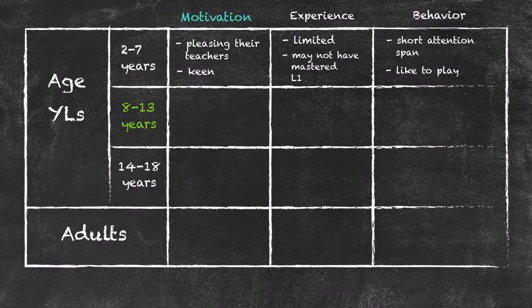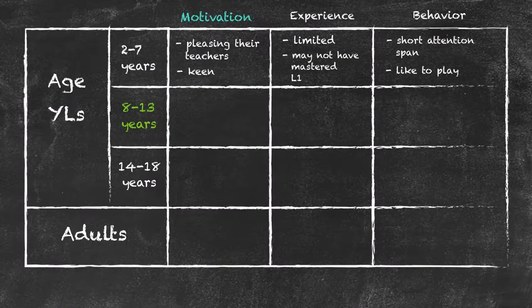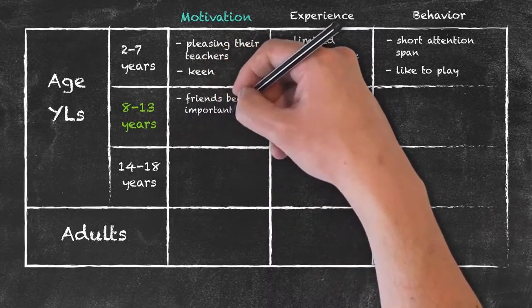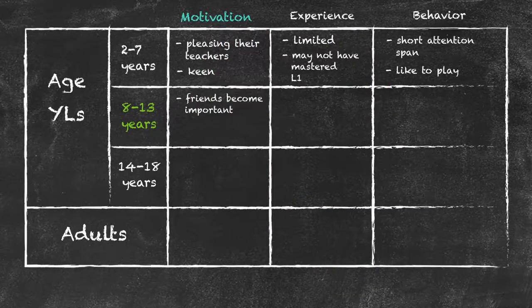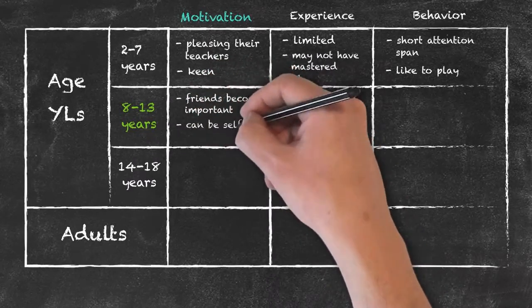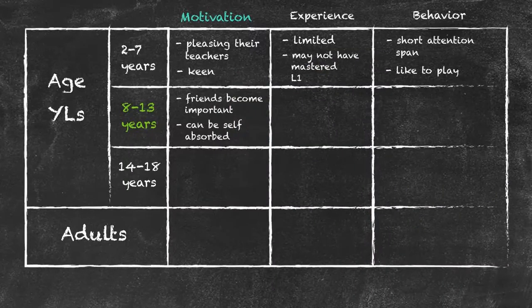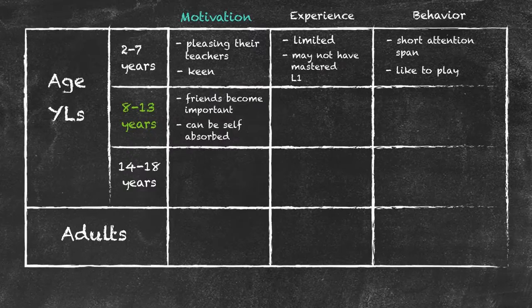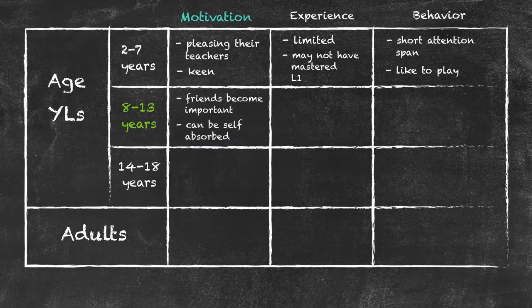Let's run through now for the 8 to 13 year olds and what type of motivations do they bring to the classroom. At this particular age, friends are becoming more important and this brings with it some positive and negative factors. Another thing about this particular age group is they can become self-absorbed. It's not unusual to see a five-year-old playing with a toy for hour after hour on end without thinking about anything else.